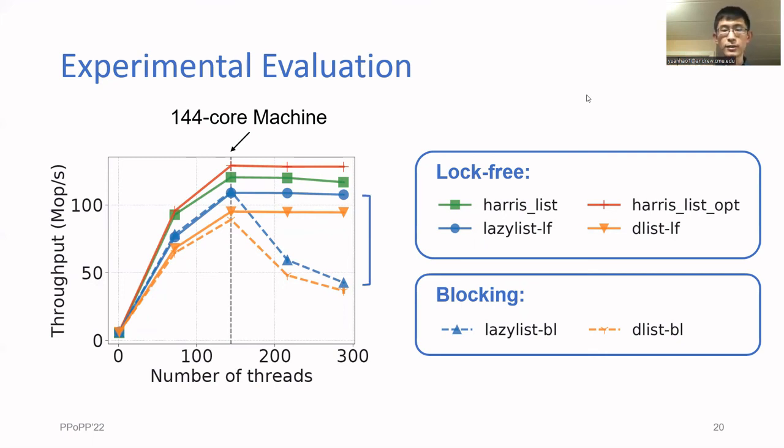This is because of the effect that we discussed earlier, where one process could take a lock and then go to sleep. A similar effect happens for the doubly linked list, which is represented by the two orange lines.